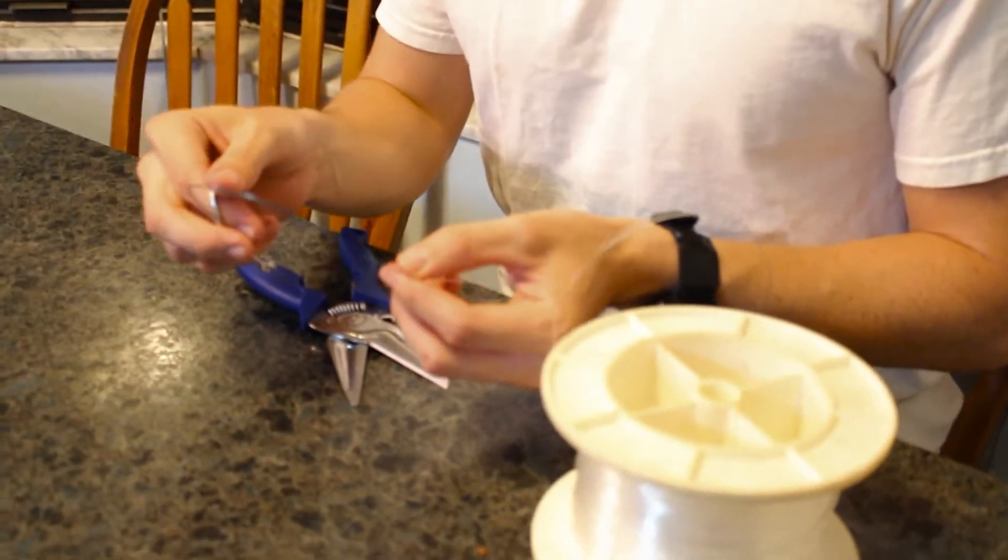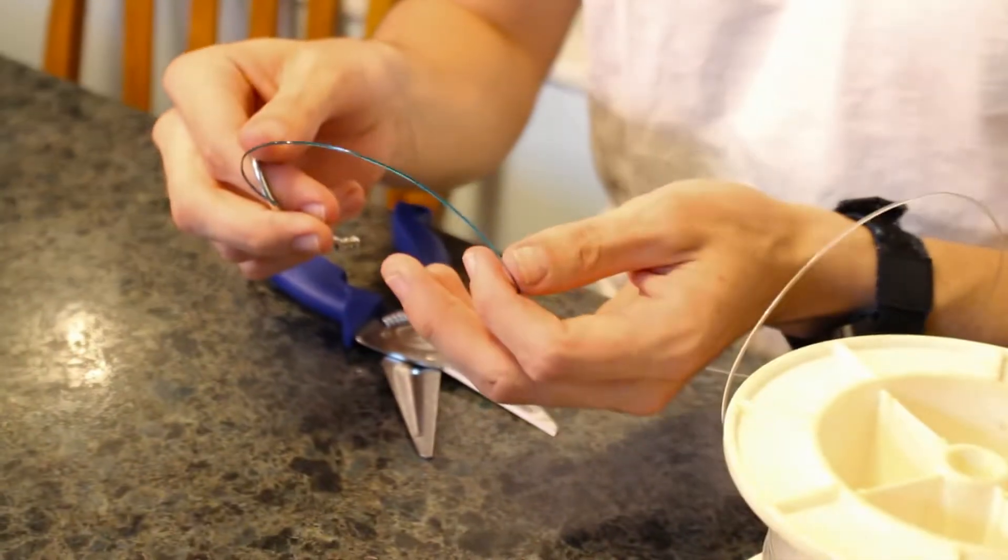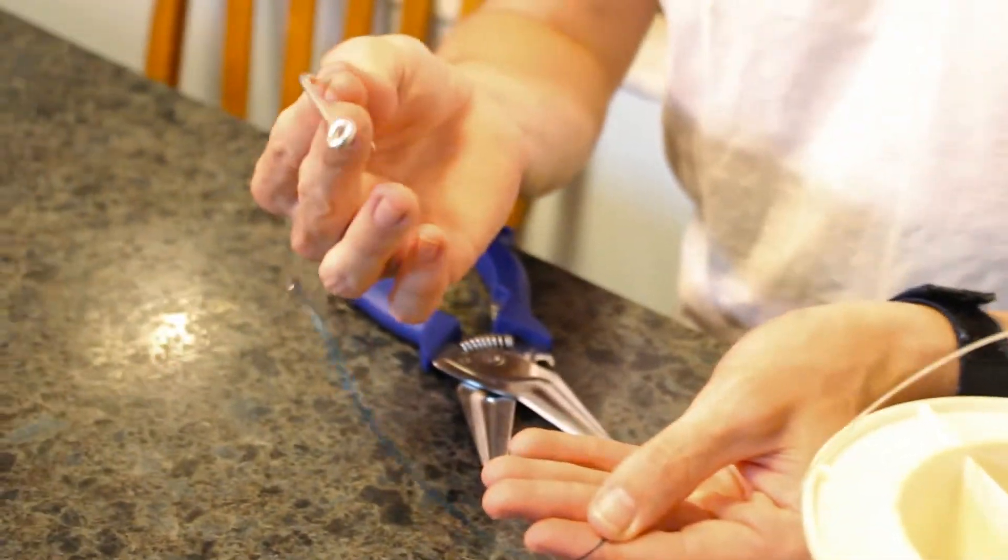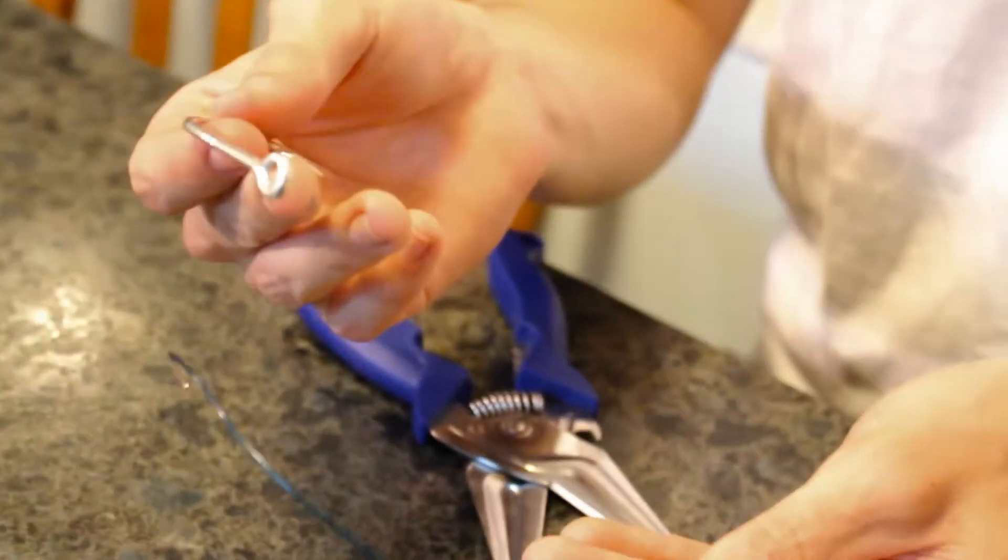I'm going to be using a bigger hook, a bigger line just to show you, but you can use it on any size. There's no limit. No rules. Okay so let's get started. I've colored my line a little so you can see it. I've got my hook. I'm going to use it on a J or a circle.